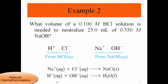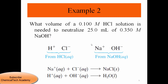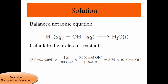The balanced net ionic equation is: H⁺ + OH⁻ → H₂O. We have the volume and concentration of the base; multiplying them gives the number of moles of base. Since one mole of base neutralizes one mole of acid, we can use the moles and the known acid concentration to find the required volume.